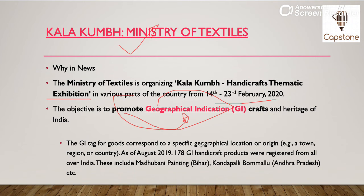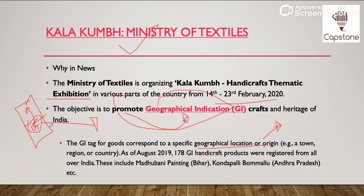GI tag ki agar hum baat karein, ye kisi bhi specific geographical location aur origin se koi bhi ek good aata hai toh uski apni ek alag khaasiyat hoti hai. Let's say agar hum baat karein Darjeeling Tea ki, toh Darjeeling ki jo tea hai, usko recognition milega agar hum use GI tag de denge, kyunki wahan ki geographical location ke kaaran woh goods apna ek specific importance rakhte hain. Aur isi liye, August 2019 tak 178 GI handicraft products were registered from all over India. These include, jaise Madhubani painting — particularly famous hai Bihar mein — Kondapalli Bommalu, jo Andhra Pradesh mein hai.